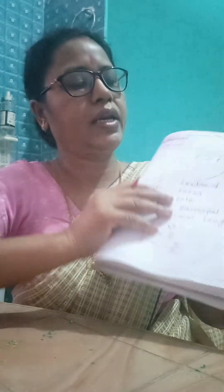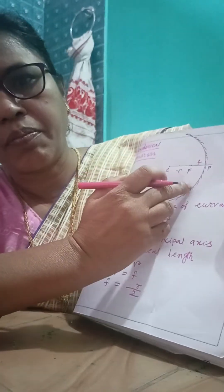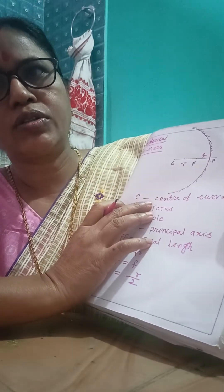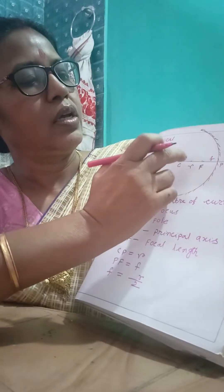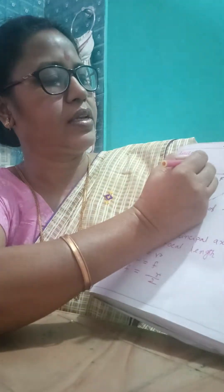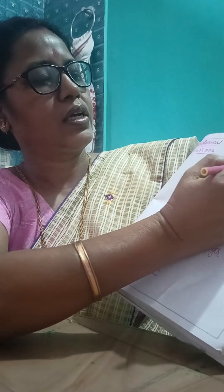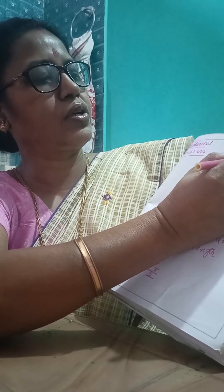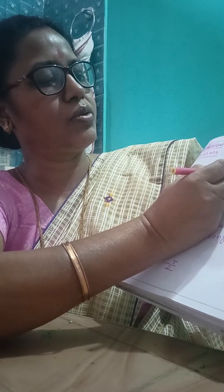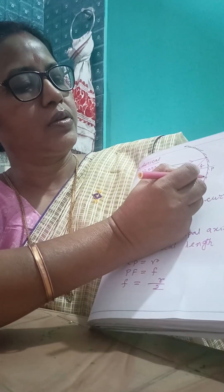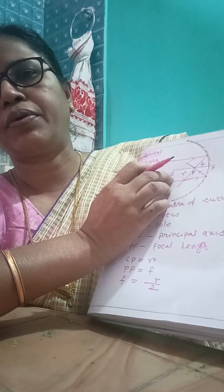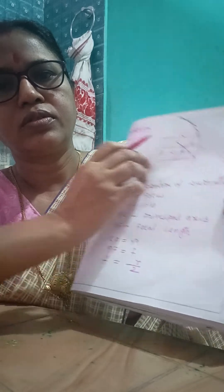When a beam of parallel rays falls on a concave mirror, reflection happens and the rays pass through the principal focus. The incident ray, parallel to the principal axis, after reflection goes through the focus. Both rays meet at a real point, so a real image is formed.